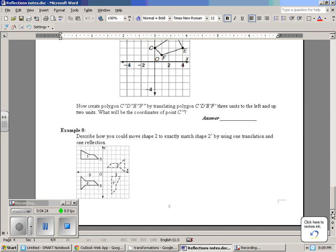The last part of this set of notes is example 8. We're supposed to describe how you can move shape 2 to exactly match shape 2 prime by using one translation and one reflection. So go ahead, pause the video, think about it on your own, and then press play.